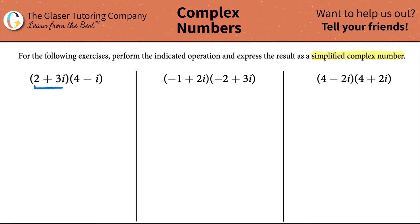We have two plus three i, all being multiplied by four minus i. So what do we do when we have two parentheses being multiplied by each other? Some students know this as the FOIL method — F-O-I-L. Let me know in the comments if they still teach this. When I was growing up, I learned it as the FOIL method, but I'm going to teach it as something different.